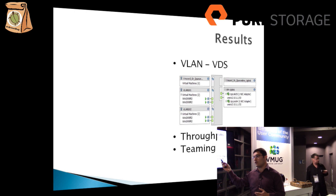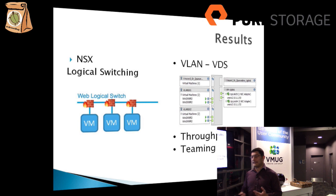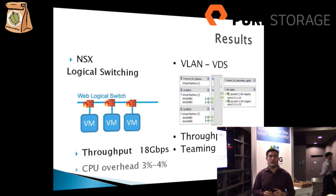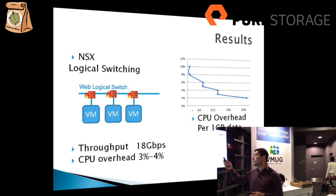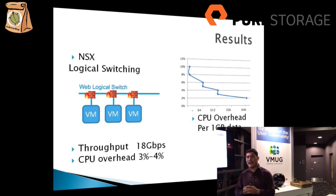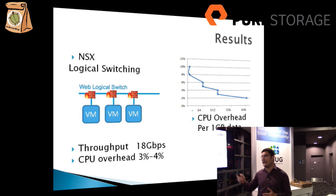After installing NSX, we created one logical switch and placed the VMs on it. The result was basically exactly the same — we got around the same throughput of 18 Gbps. The only difference was a CPU overhead of between three and four percent when doing logical routing. This three-to-four percent overhead is the number I will factor in when designing NSX.